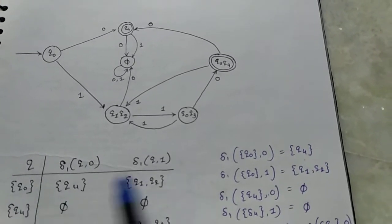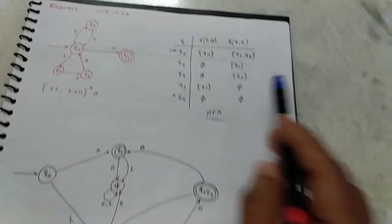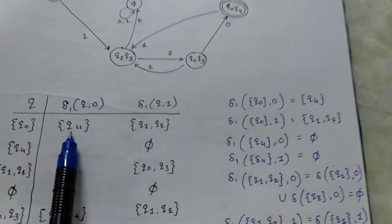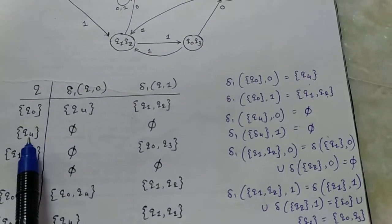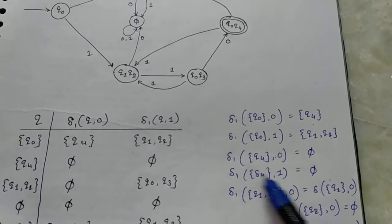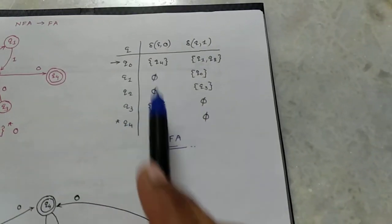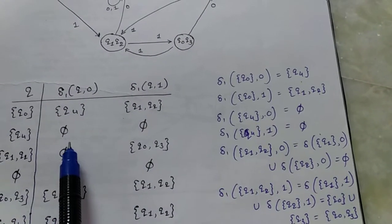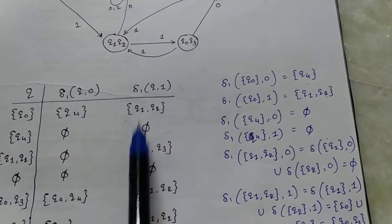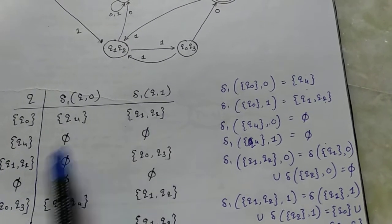For converting it into FA, starting from state q0: q0 to 0 we have q4 state, and q0 to 1 we have q1q2 state. Next, q4 state is a new state, so consider it as an input state.